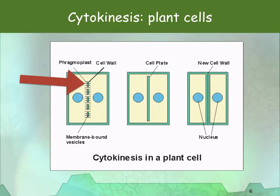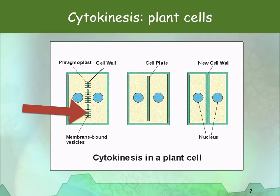In plant cells, during telophase the spindle disappears, except around the equatorial plate, where the spindle fibres increase to form the phragmoplast. The Golgi apparatus produces vesicles which, guided by the microtubules, join to form the cell plate across the equator.